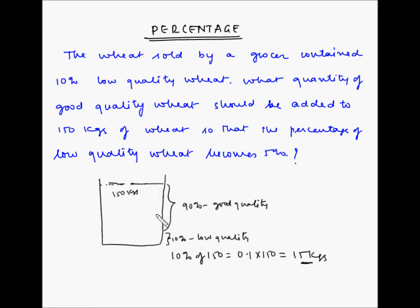Now we want to increase the quantity of wheat with good quality wheat such that this low quality wheat becomes 5% of the total amount. Now the low quality wheat will remain 15 kgs and the new wheat which is being added is only good quality wheat.